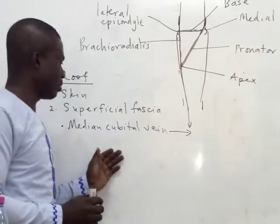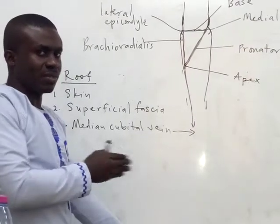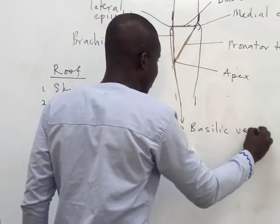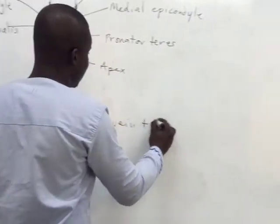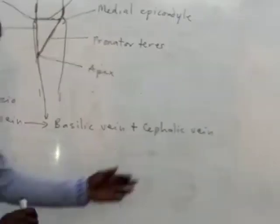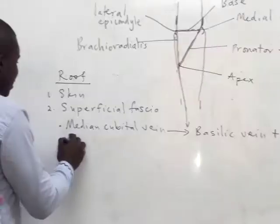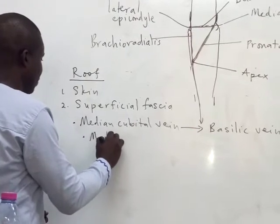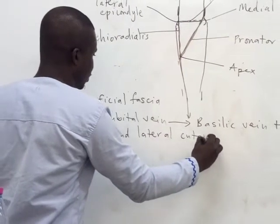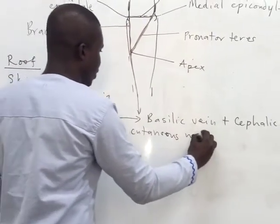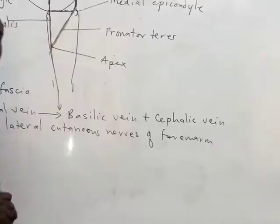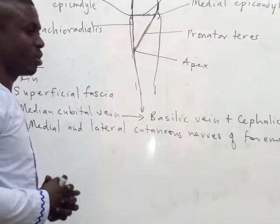This median cubital vein serves as a connection between what we call the basilic vein, medially, and the cephalic vein, laterally. In addition, we also have what we call the medial and lateral cutaneous nerves of the forearm.